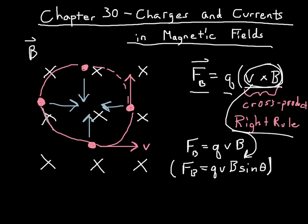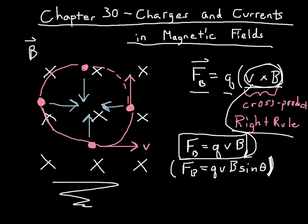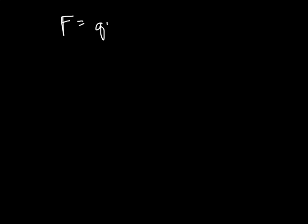I'm assuming in this case that sine of theta is 1 — that our velocity and magnetic field are perpendicular to each other, which they are in this situation as you can see in the picture. v is perpendicular to B. So I take my force equal to q times v times B. I also know that force equals mass times acceleration from Newton's second law, so mass times acceleration equals q times v times B.